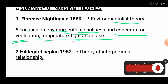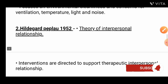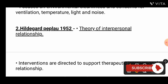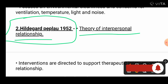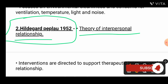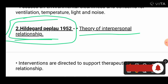Next is Hildegard Peplau, 1952 — the Theory of Interpersonal Relationships. In the exam, the question will be: the theory of interpersonal relationships was given by whom? Four options will be given. Hildegard Peplau. It is difficult to remember, but you need to remember this concept.